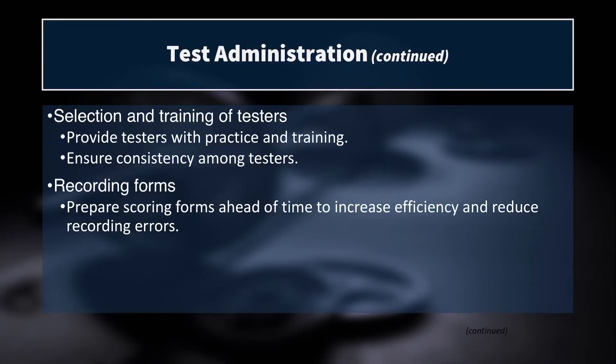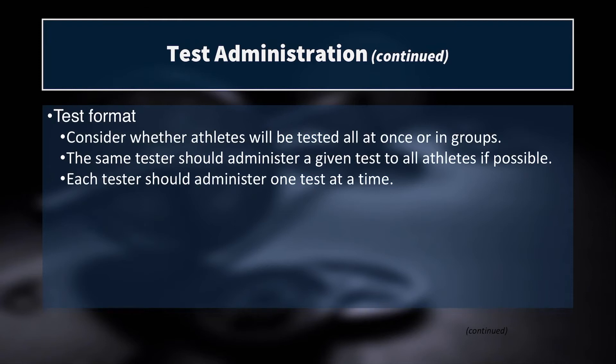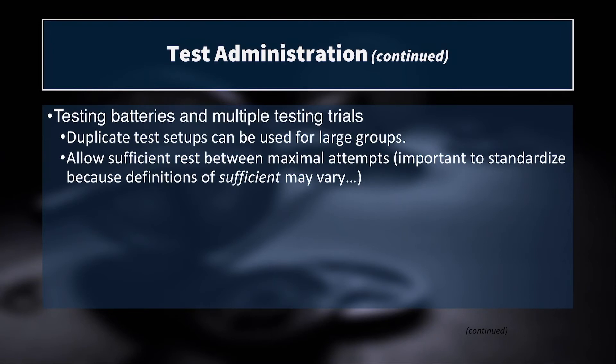Consider whether athletes will be tested all at once or in small groups on a rolling schedule. We also need to consider whether we'll do a testing battery — multiple tests — and whether we'll have multiple testing trials. For the most part, we do want multiple trials, especially when the test is not maximally fatiguing. If it is maximally fatiguing, like a 1RM back squat, a timed mile, or a yo-yo test, we're obviously not doing two back to back. But for short sprints or vertical jumps, multiple trials are definitely warranted.